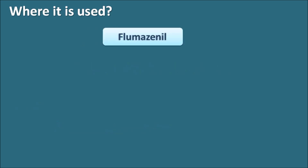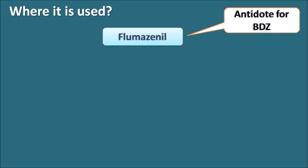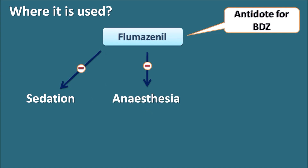Where is it used? Flumazenil acts as an antidote for benzodiazepines so it can be used for all situations related with benzodiazepine actions. One important use of Flumazenil is to reverse the sedation caused by benzodiazepines. Similarly, it can also be used to control the anesthesia caused by benzodiazepines. The only benzodiazepine used as an IV anesthetic is midazolam. Midazolam produces anesthesia, and if its anesthesia effect is more, the patient may lose consciousness and become more sedated. In such situations, benzodiazepine action can be terminated by Flumazenil.